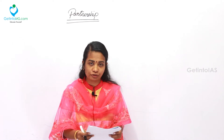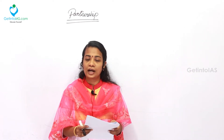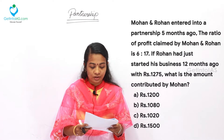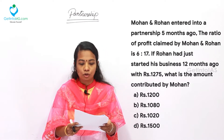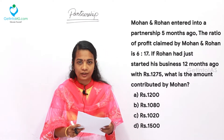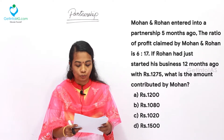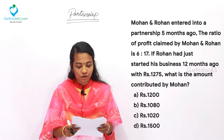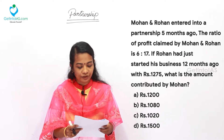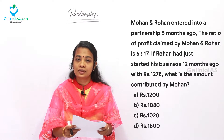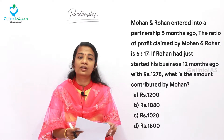This is the continuation of the previous session — practice problems on partnership. The continuation question is: Mohan and Rohan entered into a partnership 5 months ago. The ratio of profit claimed by Mohan and Rohan is 6 to 17.